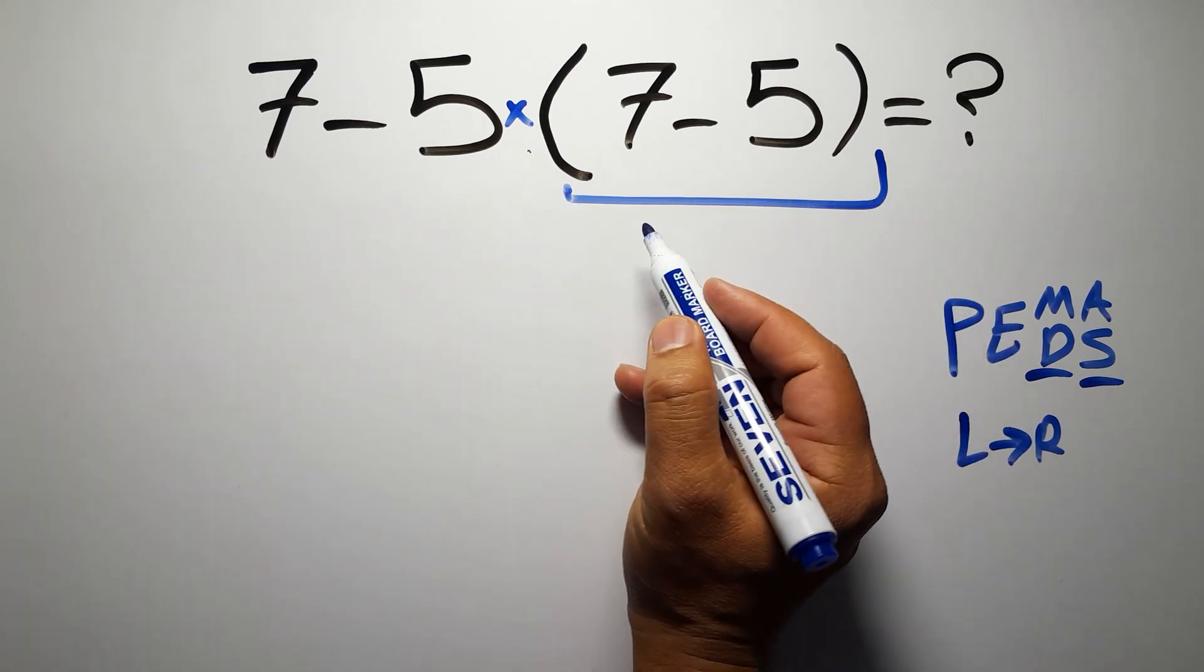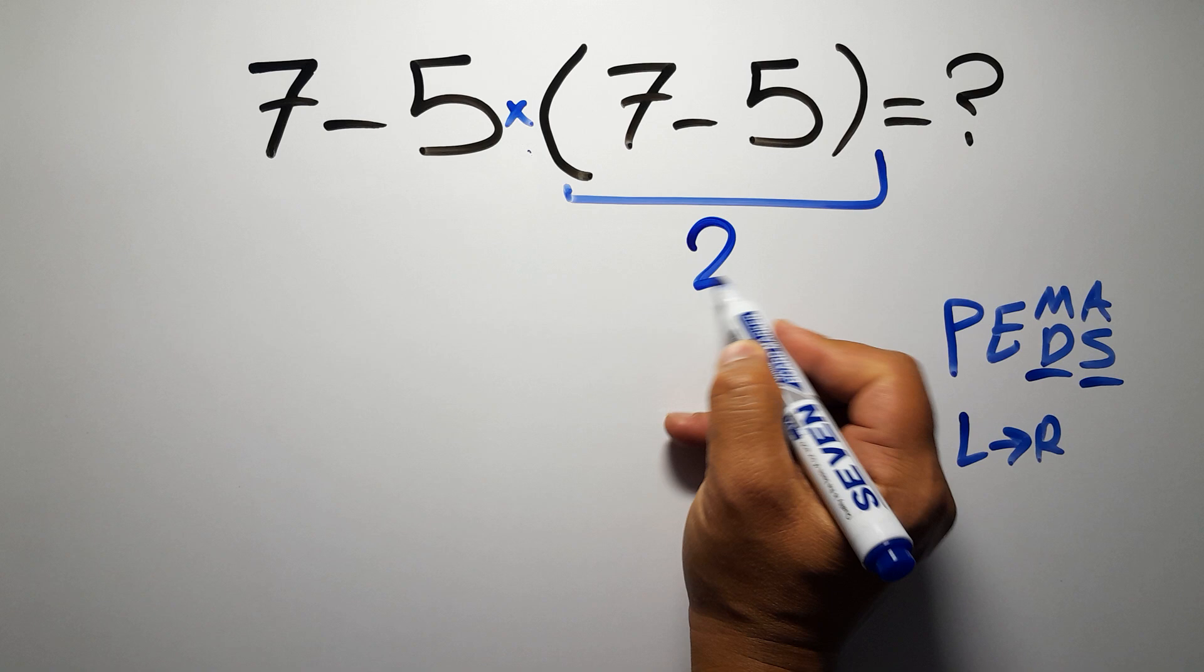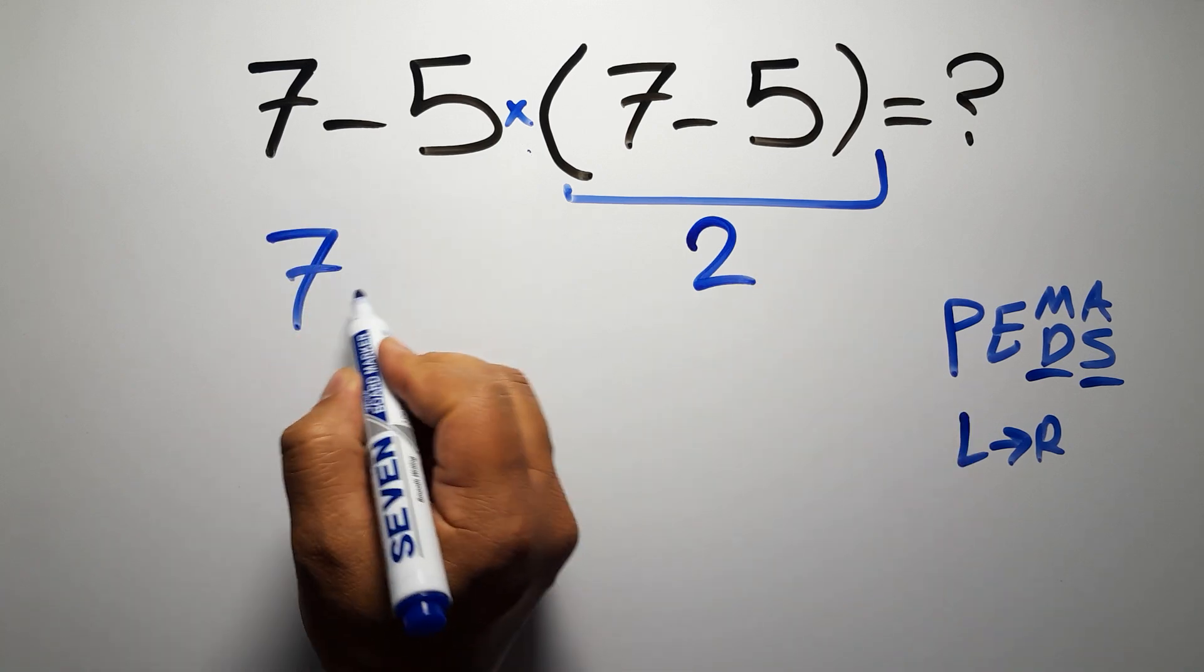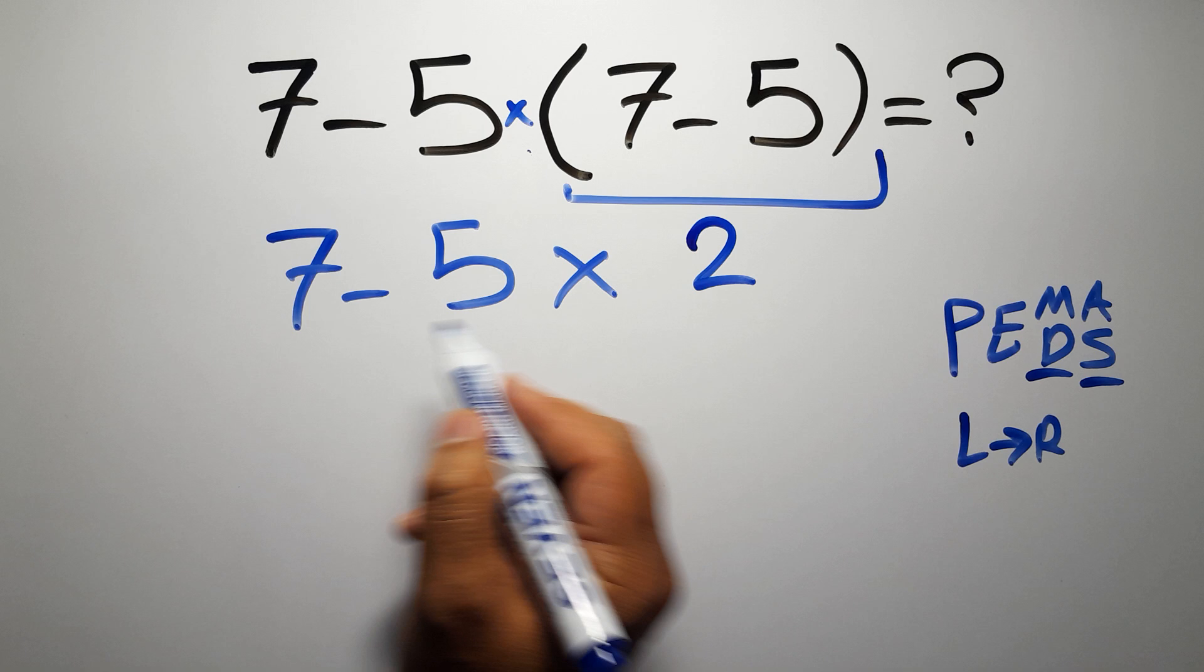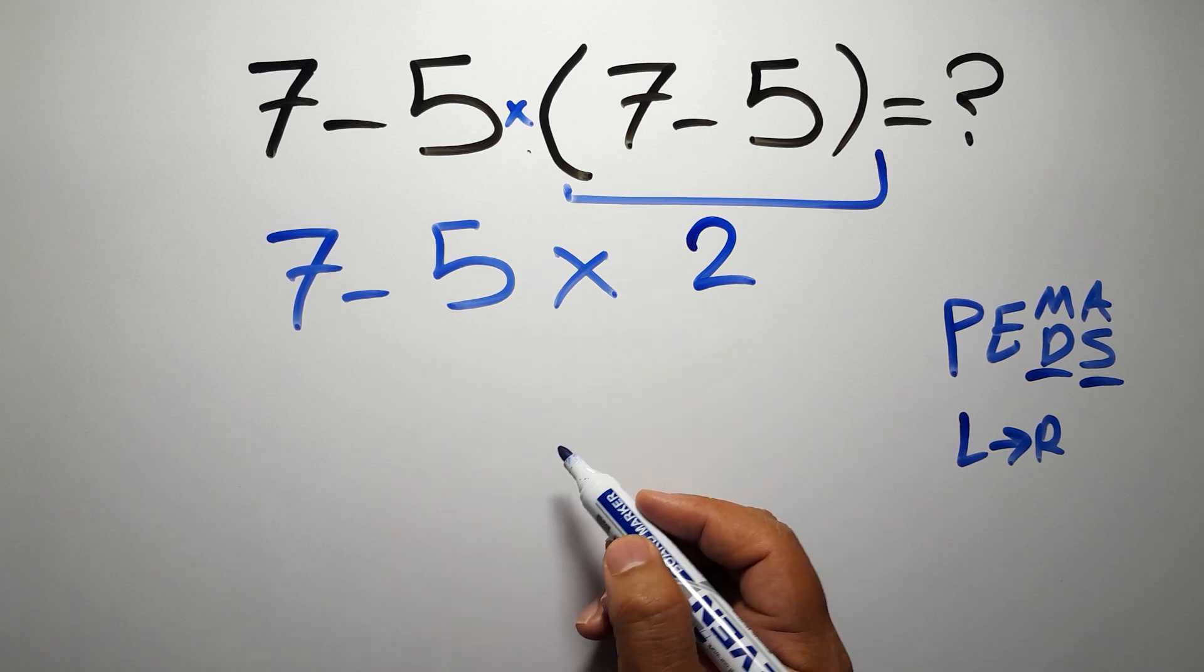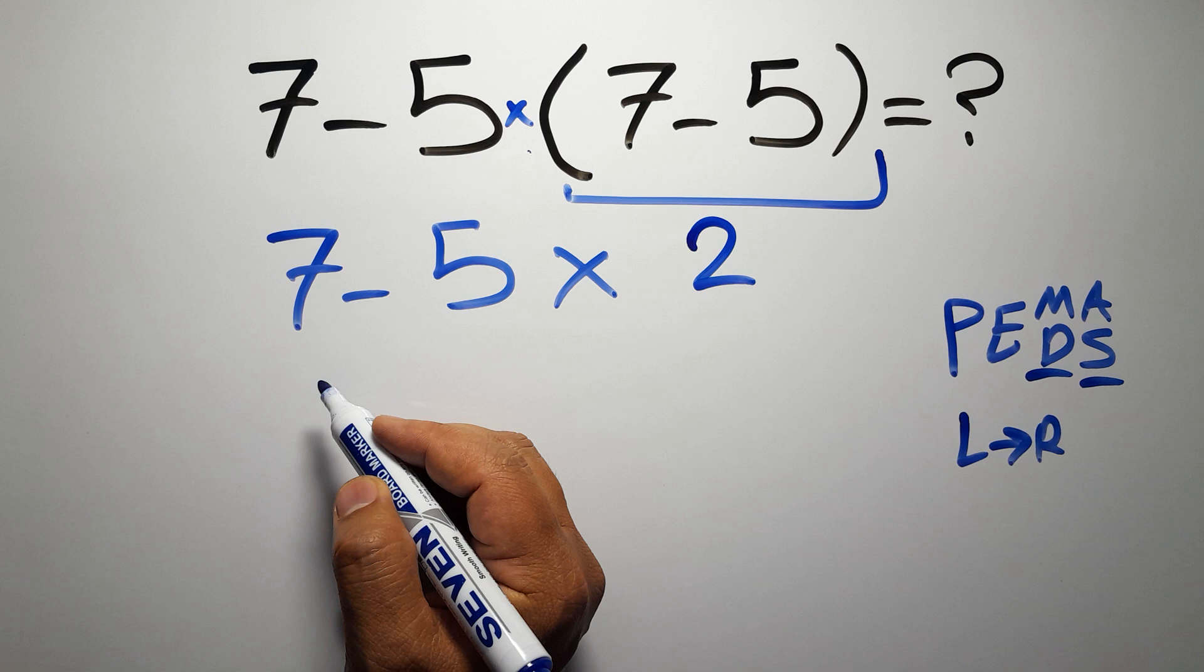So first, this parentheses. Inside this parentheses we have 7 minus 5 which gives us 2, so 7 minus 5 times 2. Now we have one subtraction and one multiplication. According to PEMDAS, multiplication has higher priority than subtraction.